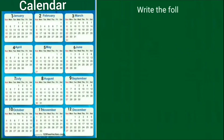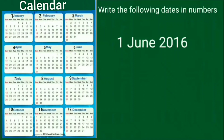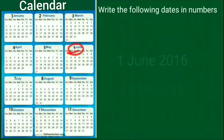Now we discuss how to write the dates in numbers. First is 1-6-16. Students, June is the 6th month of the year. So, we write it as 1-6-16.